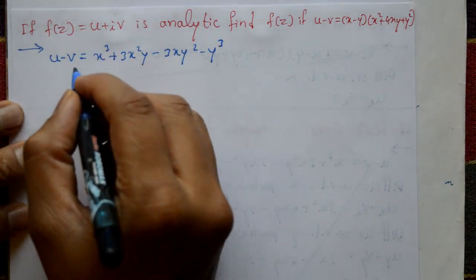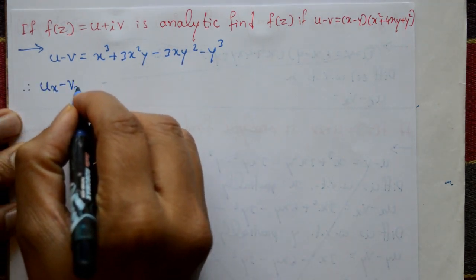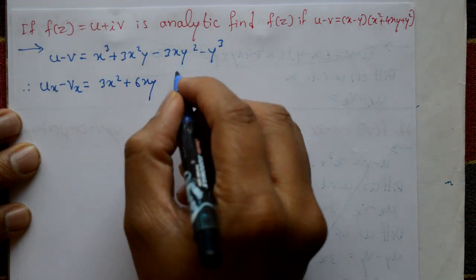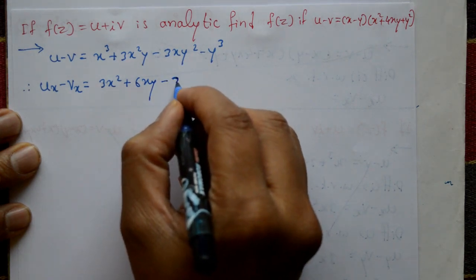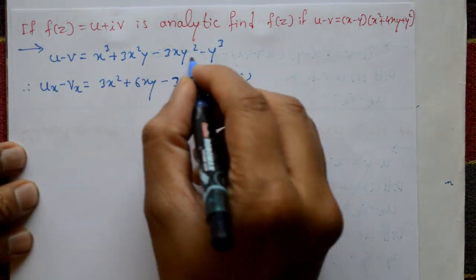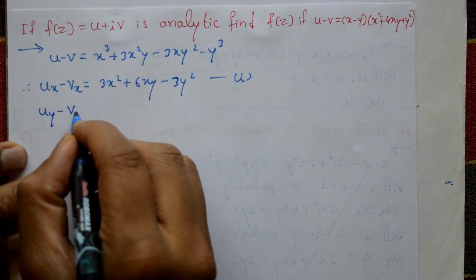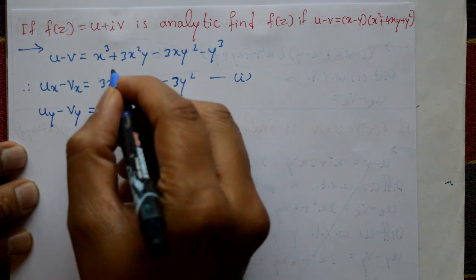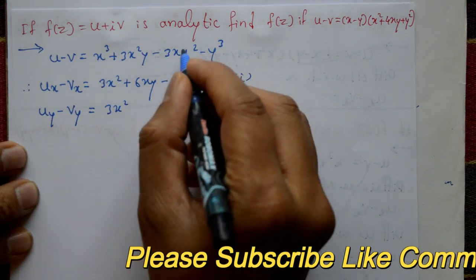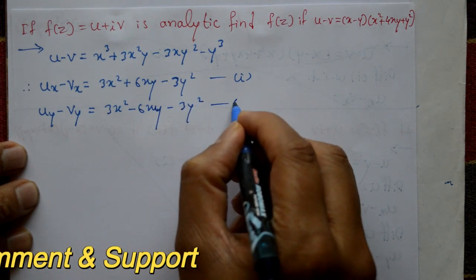Now differentiate with respect to x partially: ∂u/∂x minus ∂v/∂x equals 3x² + 6xy - 3y². This is equation number one. Again, differentiate with respect to y partially: ∂u/∂y minus ∂v/∂y equals 3x² - 6xy - 3y². This is equation number two.